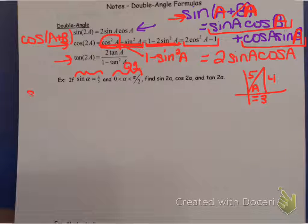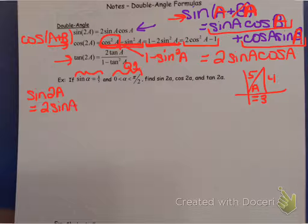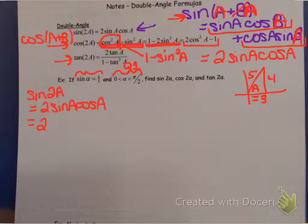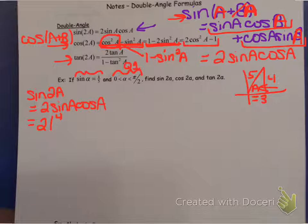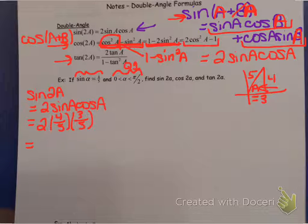If we are asked to evaluate sine of 2 times that angle, we just do 2 times sine of the angle times cosine of the angle. This allows us to find the sine value for an angle twice as big, even without knowing the actual angle size. Sine of A was given as 4/5, and cosine of A from the picture is 3/5. Multiplying those three numbers together gives 24/25.